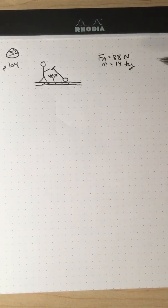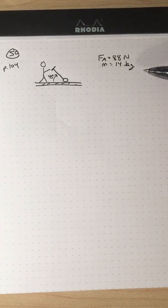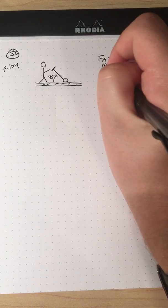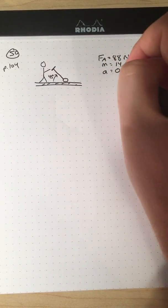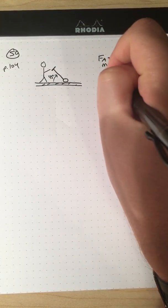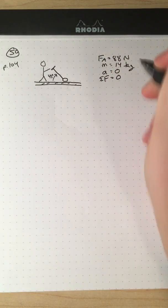It says a person pushes a 14-kilogram lawnmower at a constant speed with a force of 88 newtons. By the way, what does the fact that it's a constant speed mean? It probably means that the acceleration is zero, or I guess we could say that the net force equals zero.